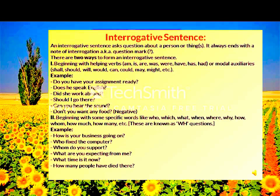There are two ways to form an interrogative sentence. The first way is to begin with a helping verb or auxiliary verb: is, are, have, was, were, has, had, and modal verbs like shall, would, can, could, may, might.